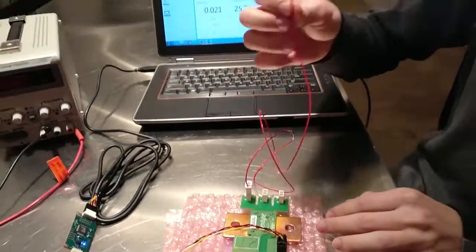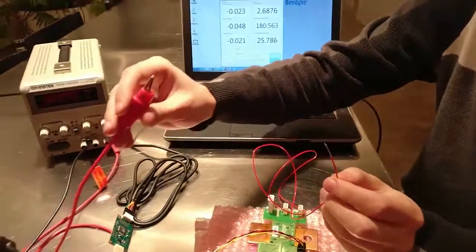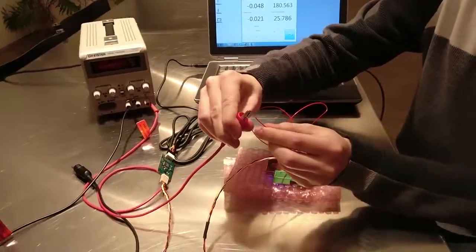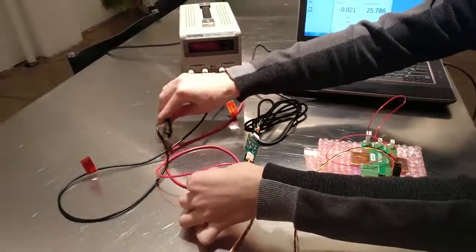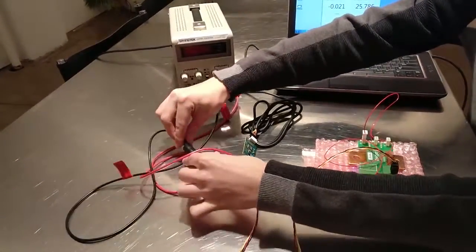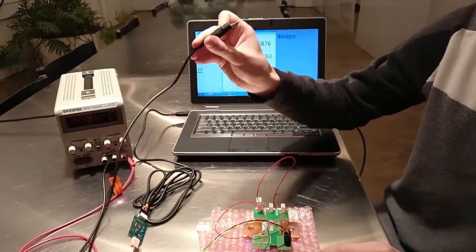Now we take the positive side of the voltage input to our voltage source—in this case, the positive terminal from the power supply. Next, we grab the negative cable from our voltage source and connect it to the negative side of the terminal.